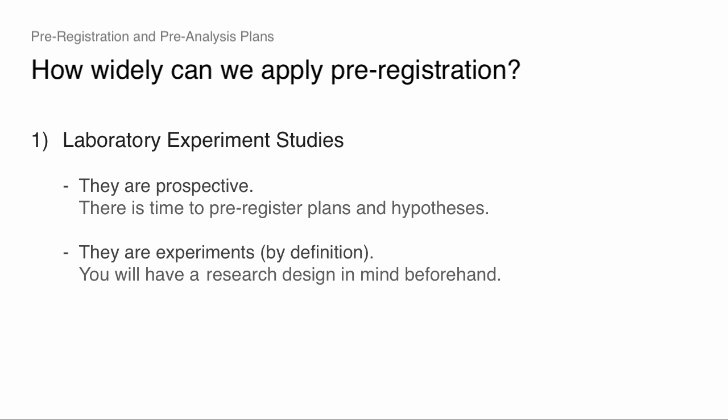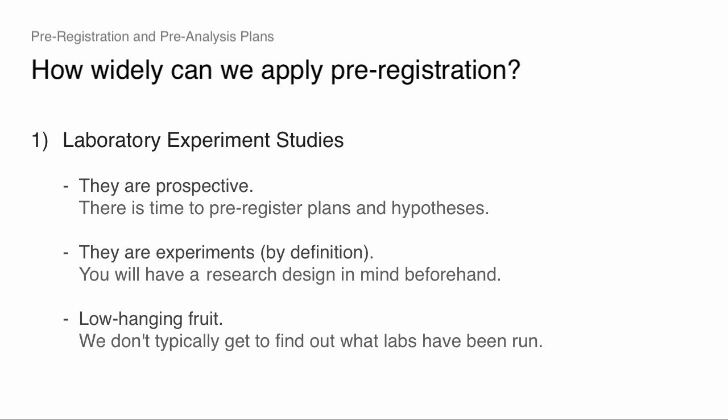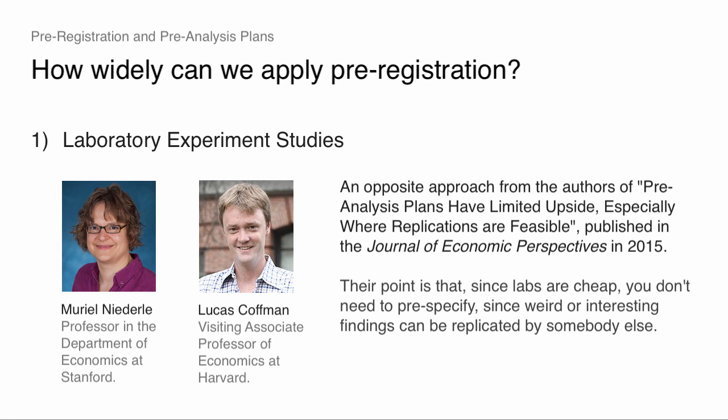So this is a case where it seems like low-hanging fruit. Muriel Netterly at Stanford and her co-author Kaufman take the opposite approach. Their point is: labs are cheap to run — you can run a lab for $1,000 or $2,000 or something like that. So in that case, you don't really need to pre-specify. Any weird, interesting finding that comes out of a lab should just be replicated by somebody else, maybe replicated 10 times. So the cheaper the cost of replication is — if it were literally costless — then maybe pre-specification isn't as essential, because at low cost you can check if this actually holds.